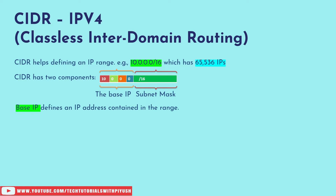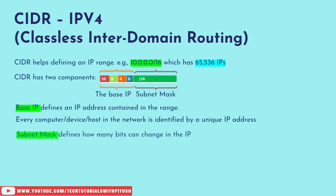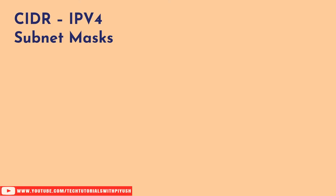The base IP defines an IP address contained in the range. Every computer, host, or device in the network is uniquely identified by an IP address. The subnet mask defines how many bits can change in the IP. It can take either of two forms: 255.255.255.0, which you may have seen in Windows, or the slash notation like /24, /16, /32, which is more common in cloud networking — AWS, Azure, GCP all use this format.